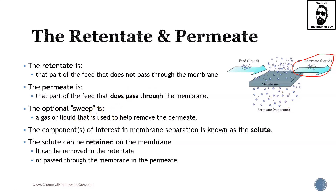The optional sweep — you may encounter this, though it is not common. Sweep is a gas or liquid that is used to help remove the permeate. Many times you will need a material or a carrier gas to remove the permeate. The component of interest in the membrane separation is known as the solute. You may have your permeate, but if you're talking about ions, you may have many ions and you want to talk about the actual solute you're working with. The solute can be retained on the membrane, removed in the retentate, or passed through the membrane in the permeate. So it is very important to consider retentate, permeate, sweep, and feed.